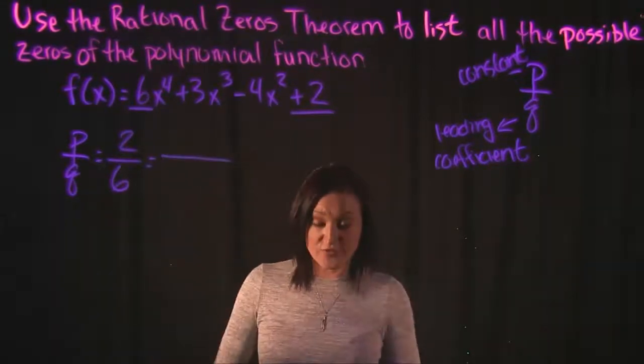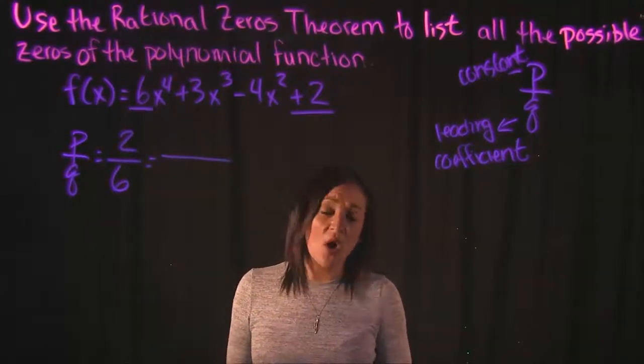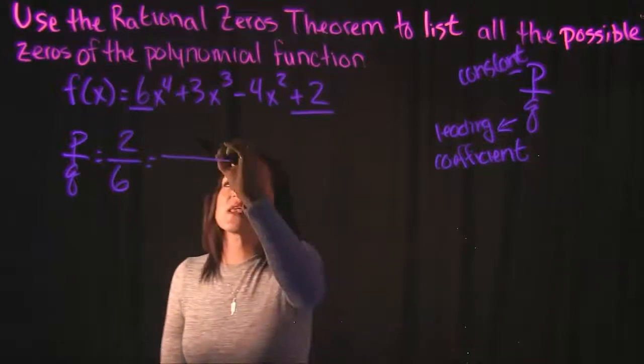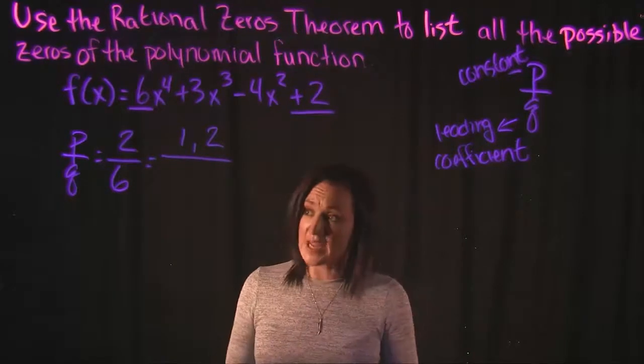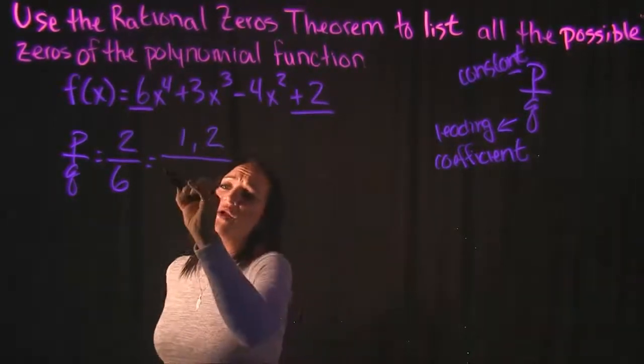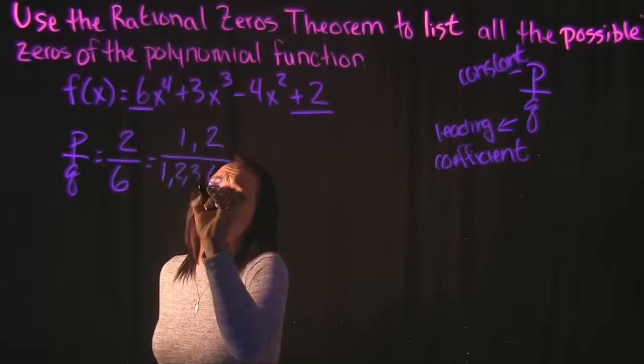So if we list all the factors of 2, there's not that many of them. All the factors of 2 would just be what are all the numbers that multiply to get 2. Well, the only way to get 2 is 1 times 2. So taking a look at 6 now, we need to list all the possible factors of 6. The only way to get 6 is 1 times 6 or 2 times 3.